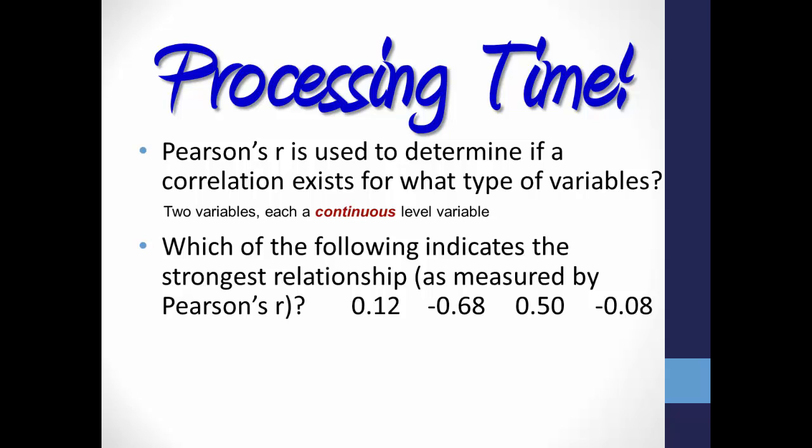Well, now, remember that Pearson's R ranges from a negative 1.0, which is a perfect negative correlation, to a positive 1.0, a perfect positive correlation. The closer the statistic is to 1, either on the negative side or on the positive side, the stronger the correlation or relationship. So, of these, negative 0.68 represents the strongest correlation, and negative 0.08 represents the weakest.